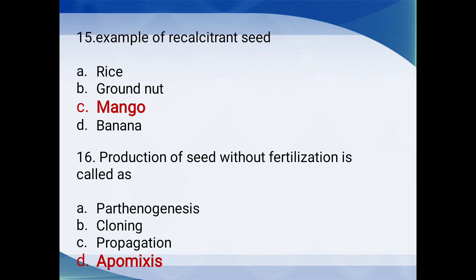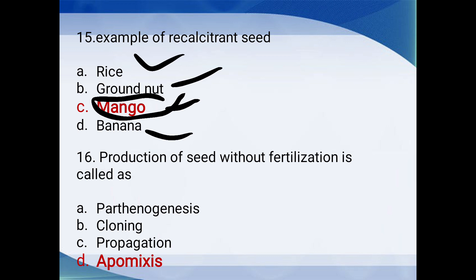Example of a recalcitrant seed: rice, groundnut, mango, or banana? The answer is mango. Recalcitrant seeds cannot be dried or frozen for long-term storage — they cannot survive drying or temperatures below 10 degrees centigrade. Production of seed without fertilization is called parthenogenesis, cloning, propagation, or apomixis? The answer is apomixis.